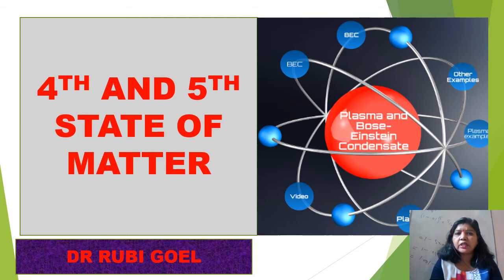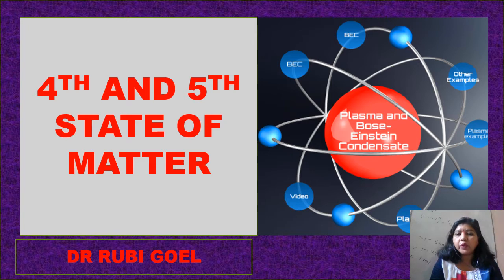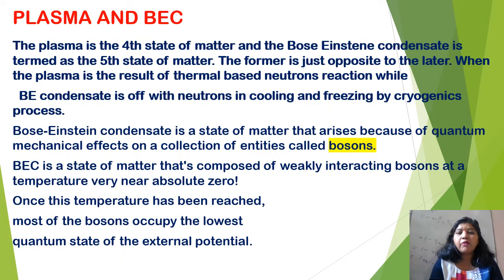The 4th state of matter is plasma and the 5th state of matter is BEC — Bose-Einstein Condensate. The 4th state is plasma and the 5th state is Bose-Einstein Condensate. We will discuss both: what is plasma and what is BEC?